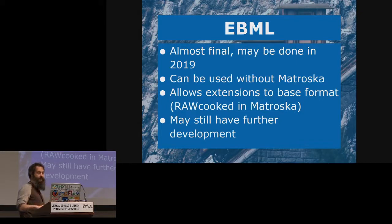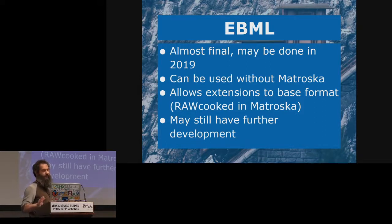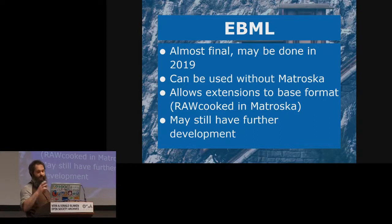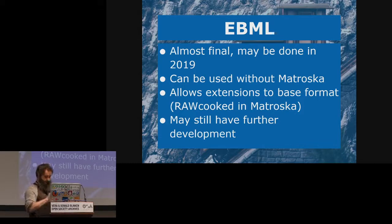For EBML, we are almost done. There's only one remaining technical IETF issue to decide, and otherwise the document is what they call ready for standard. I hope it will be done in 2019, otherwise probably early 2020. EBML is the underlying format designed for Matroska but can also be used for other things — for example, Roku is using EBML to store DPX metadata information in their own EBML format, attached at the end of the Matroska file. There are also further developments we can add to EBML, but for now we're focusing on what exists and on Matroska.